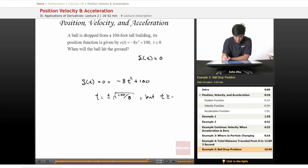But t must be greater than or equal to zero. So we have to take out the negative version. So it's just simply square root of 100 over 8 or 3.5 seconds.